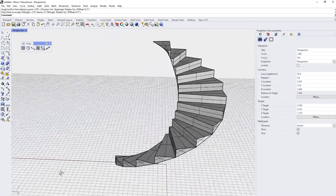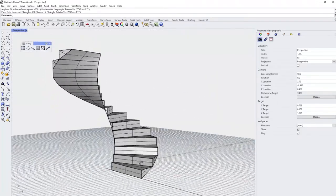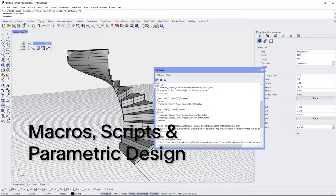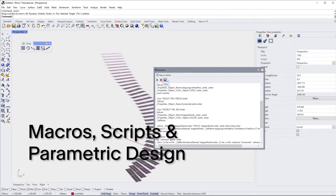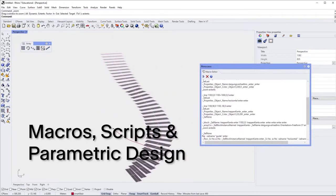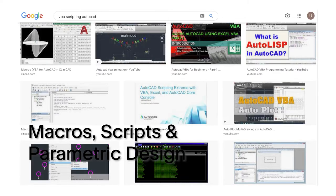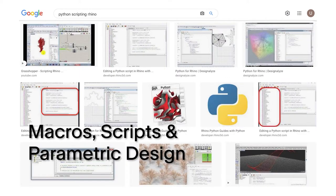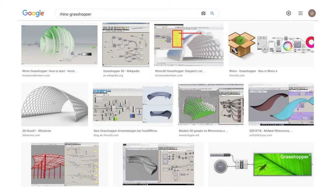But of course it doesn't stop there. Today's CAD programs all have some sort of possibilities to write scripts or macros that extend their capabilities. Users can define their own commands. This can be done with a scripting language such as Visual Basic or Python. Or it can be done in a visual programming language such as Grasshopper or Dynamo.